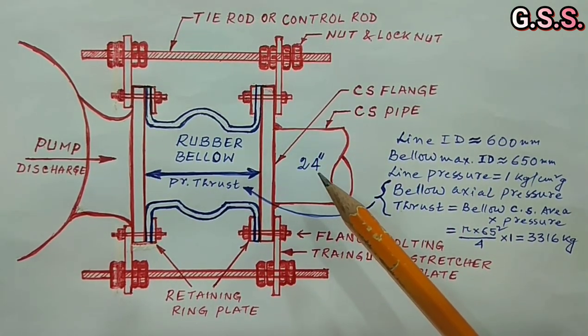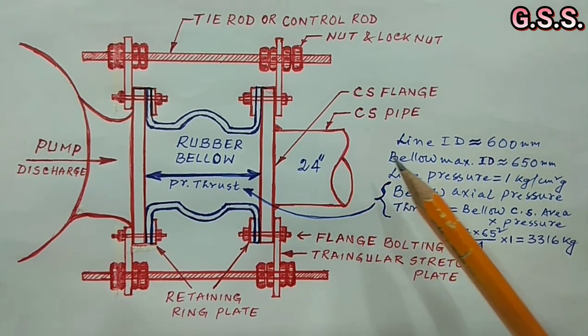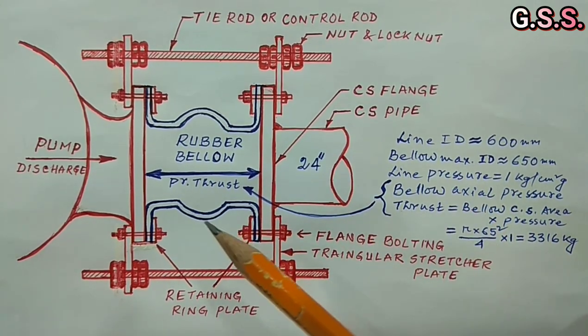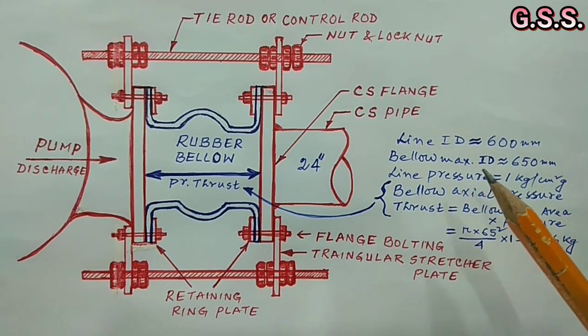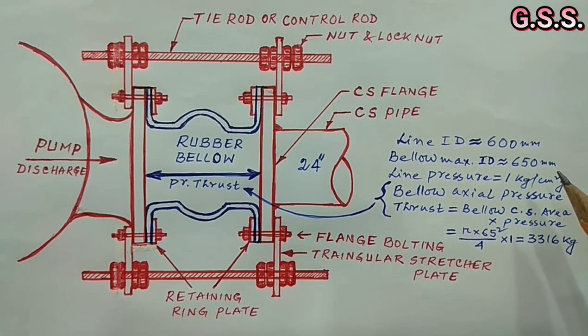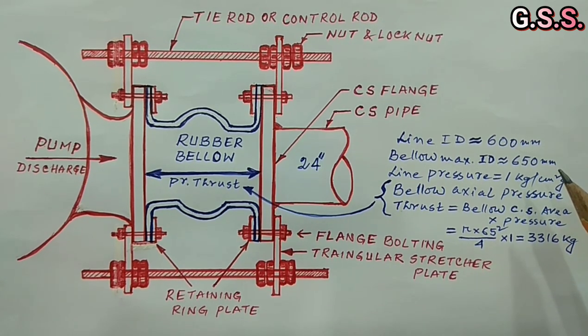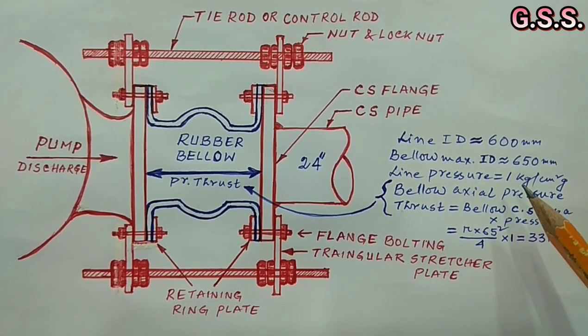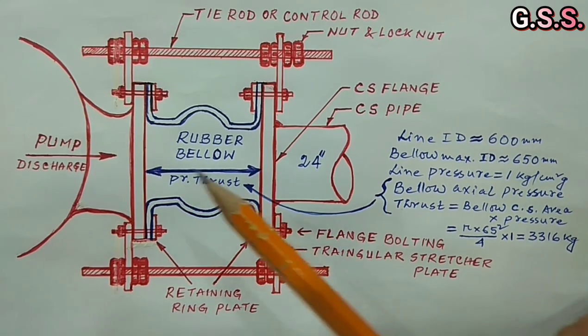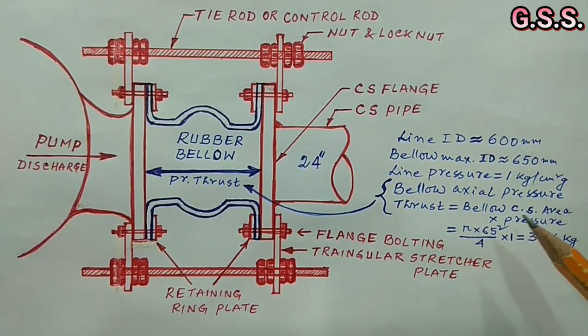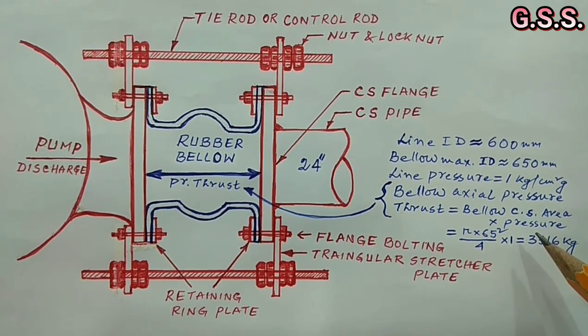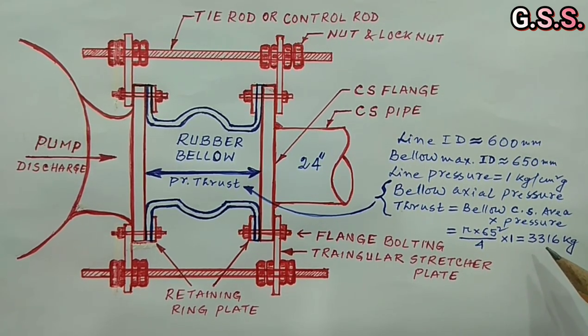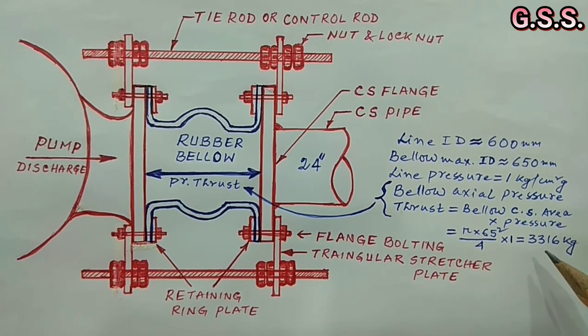Now, say line size is 24 inch. So, pipe ID or bellow ID is about 600 mm. Bellow middle portion is having more diameter. So, bellow maximum ID will be about 650 mm means 65 cm. If line pressure is 1 bar gauge that means 1 kg per cm square gauge then axial pressure thrust across the bellow equals to bellow cross sectional area into internal pressure equals to pi into 65 square divided by 4 into 1 equals to 3316 kg equals to say 3.3 ton.